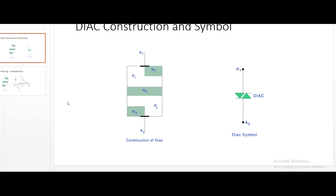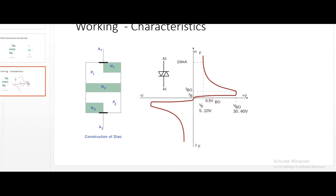Moving on to the working of DIAC - before going into the working, let's understand what happens when DIAC is forward biased. It will be forward biased in both A1 and A2 separately. When A1 is forward biased, positive is connected to A1 with respect to A2. If you connect MT1 or A1 to the positive terminal, A2 will be connected to the negative terminal. Two cases: A1 forward biased with respect to A2, and A2 forward biased with respect to A1.